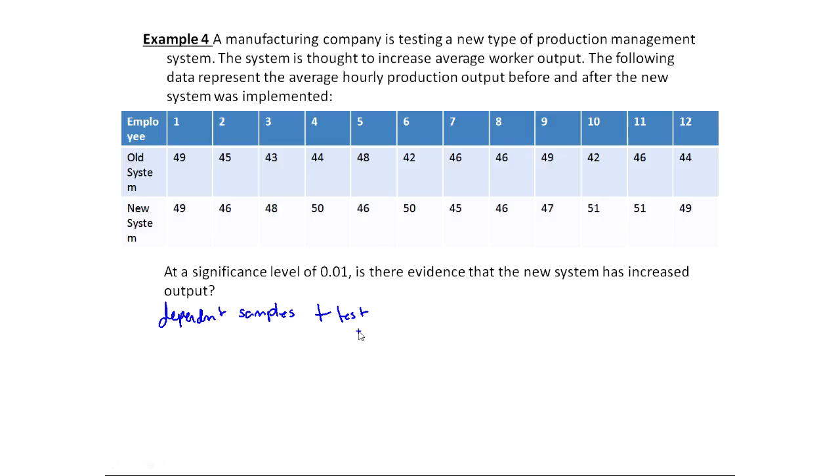With a dependent samples t-test, we're going to find the differences. Before we get to that, let's talk about what H naught and HA would look like. I need to be careful about which group I'm choosing to be the first group and which is the second group. I'm just going to go in order, this is one, this is two. We can think of this like before, the old system, and we can think of this as after, the new system. Is there evidence the new system has increased output? What I'm actually asking is when I compared before and after, is after bigger? Is group two bigger? Is two bigger than one?